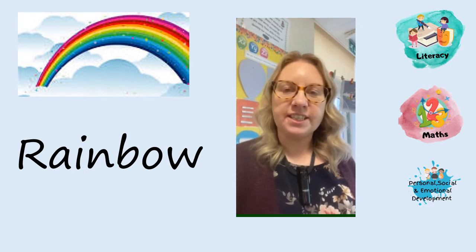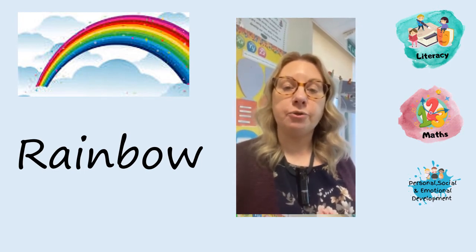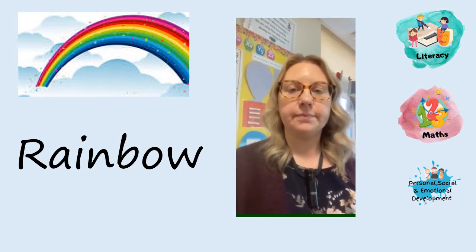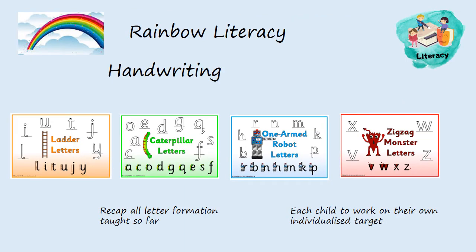Hi, Mrs Blewett here. I'm really excited to tell you what your child is going to be learning for the spring term 2022. I'm going to go through what we're learning in literacy and numeracy, in our curriculum work, and also in our emotional and social skills. In handwriting last term, we practised all of the letter families — the ladder letters, the curly caterpillar letters, the one-armed robot letters and the zigzag monster letters. Now each child is going to work on their own individualised target, practising the letter they need to work on until they can write all the letters of the alphabet formed correctly, so that later on they can learn to join the letters.